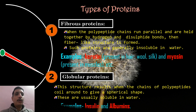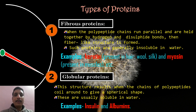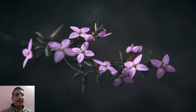Examples of globular protein are insulin protein and albumin protein — egg albumin is a globular type protein. So these are the two types of protein: fibrous and globular.